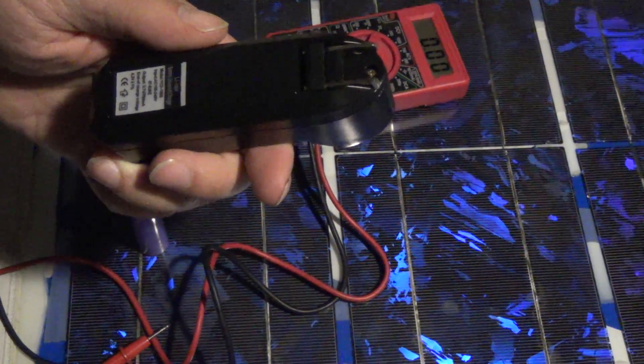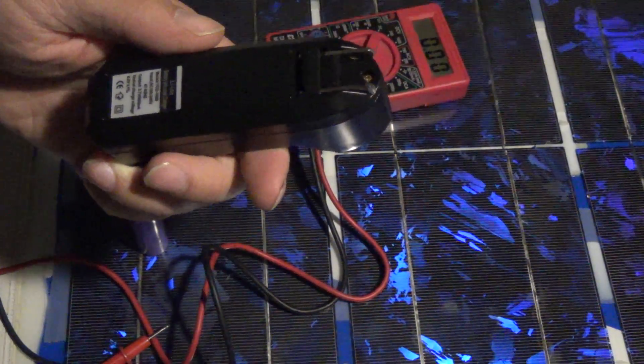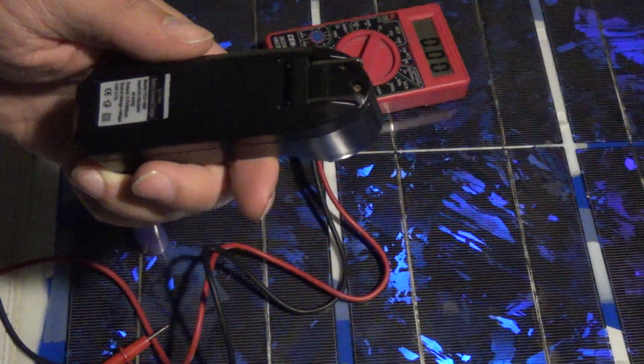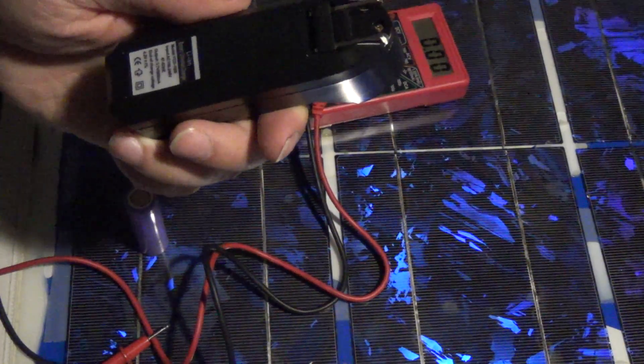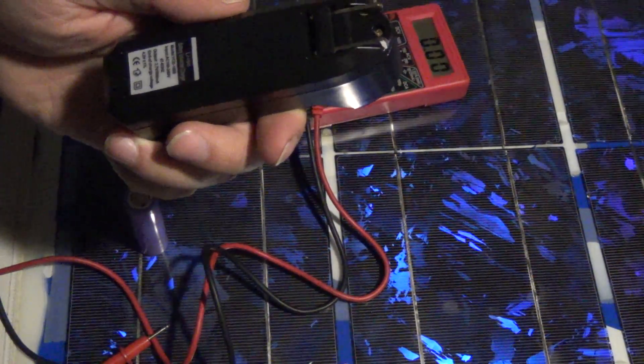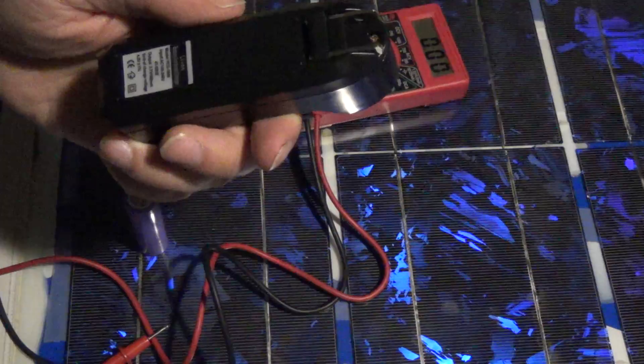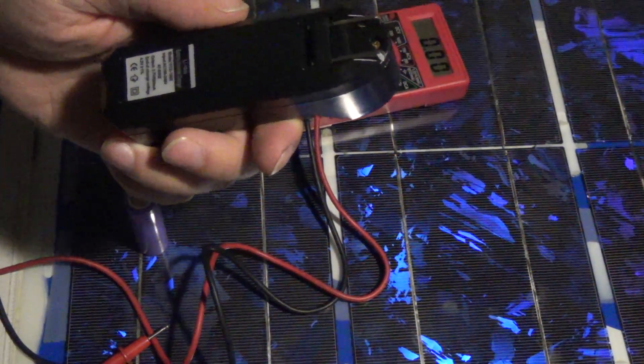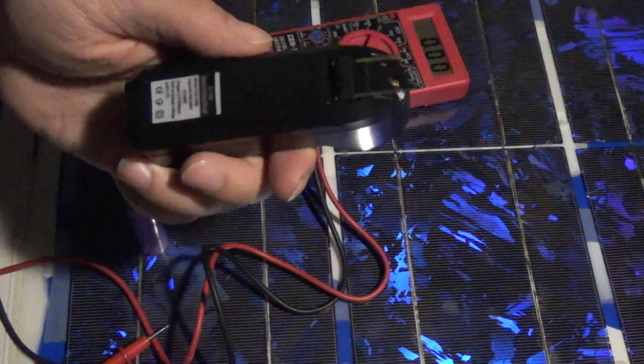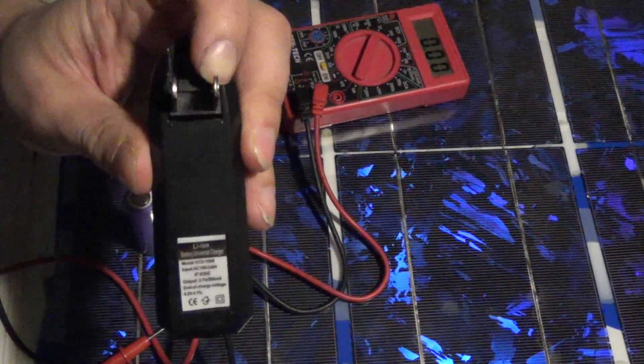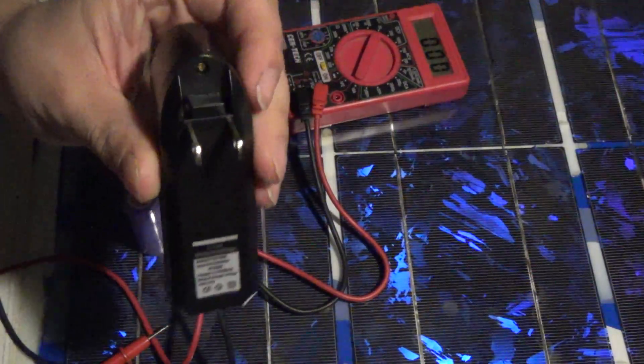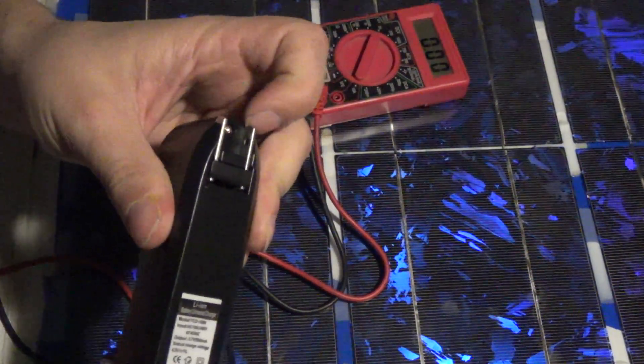Output is 3.7 volts, 500 milliamps. End of charge voltage should be 4.2 volts plus or minus 0.1 volt. It's got the US style plug that folds out and folds in.